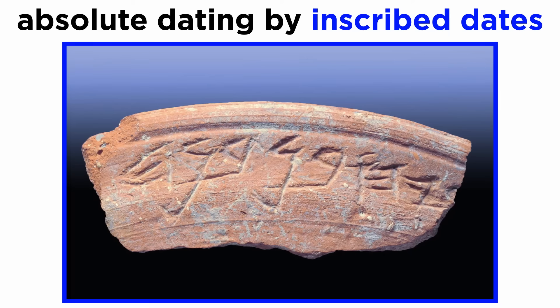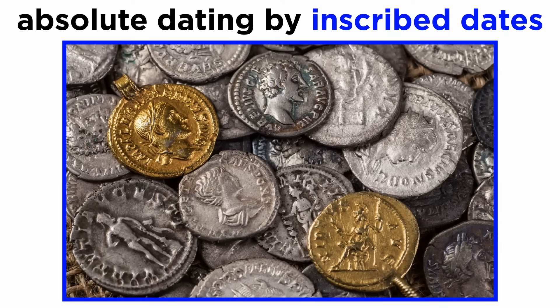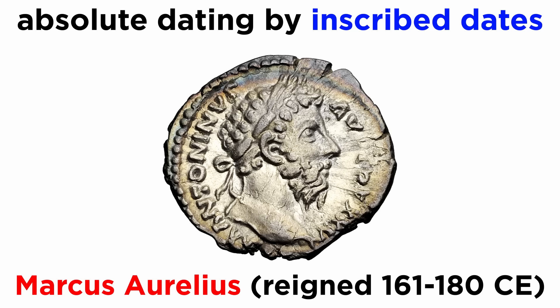A simple form of absolute dating in archaeology is examining artifacts that have dates already inscribed on them in some way. One of the most common forms this takes is through coins. For example, Roman coins commonly have the current emperor's head engraved into them. Since we know through historical texts the date ranges for the reign of each emperor, we can date the coin easily.